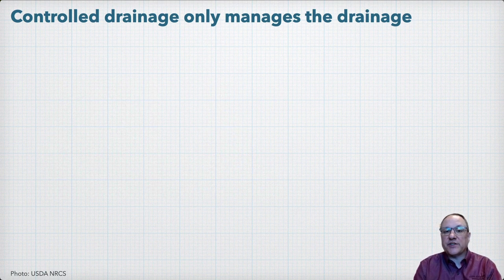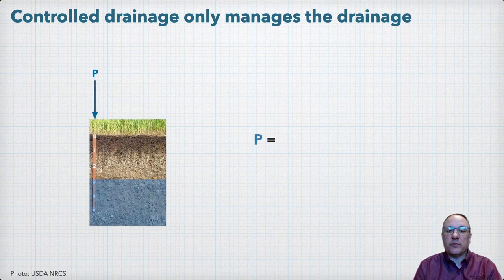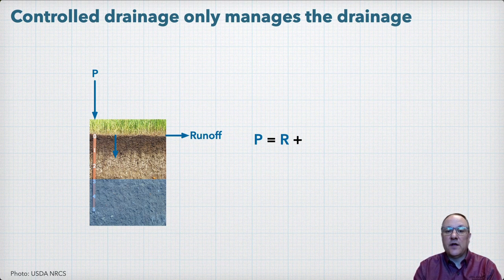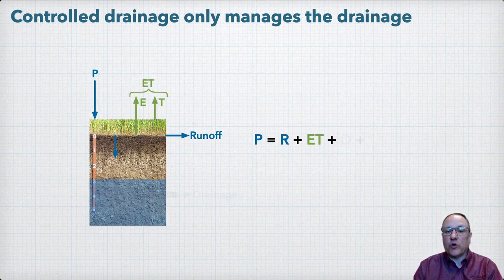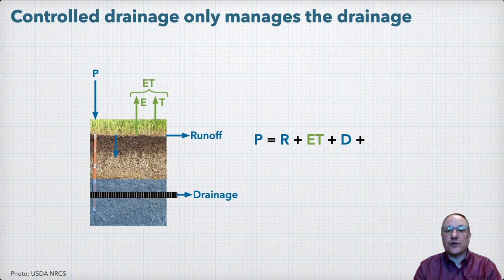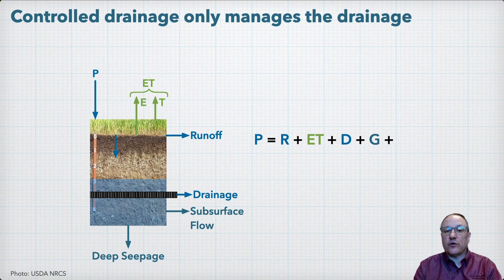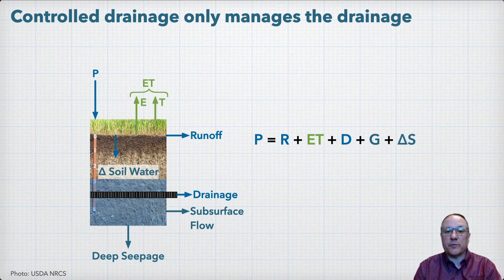Starting with precipitation, which is our primary input to the water balance: of that precipitation, some infiltrates into the soil and some may leave the system as surface runoff. Of the water that infiltrates, much of that will return to the atmosphere as evapotranspiration. Then, in poorly drained soils, we can use artificial drainage to remove excess water from the field. We can also have lateral or vertical groundwater flow into or out of our control volume. Finally, we have the change in soil water storage between time steps to complete the water balance.